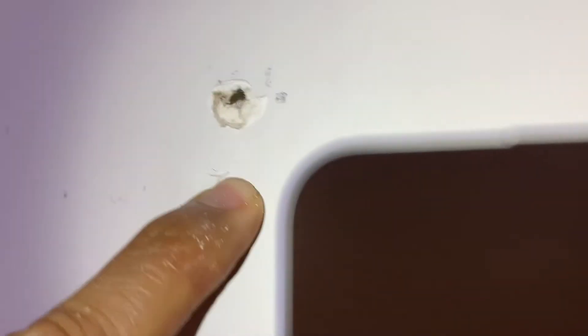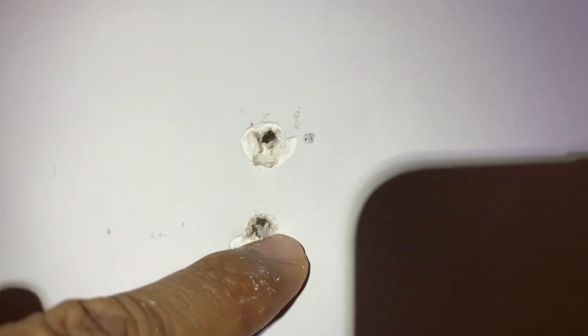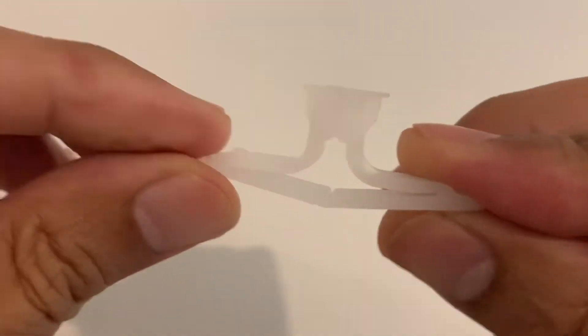This is what the damaged holes look like. I'll use a drill to enlarge the hole a little bit and then insert the butterfly anchors. This is what these anchors look like.